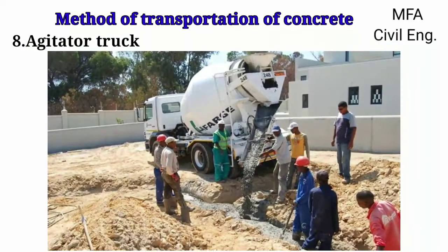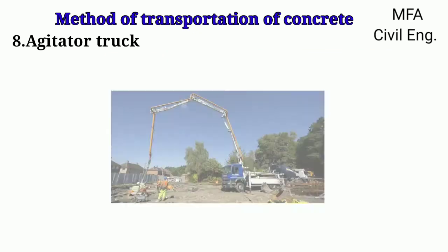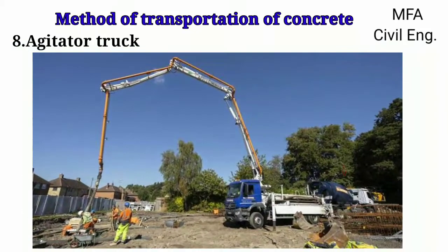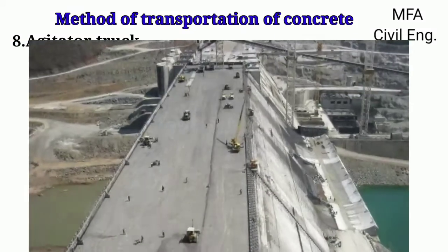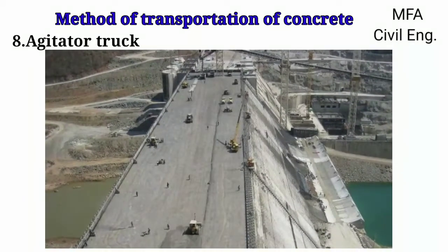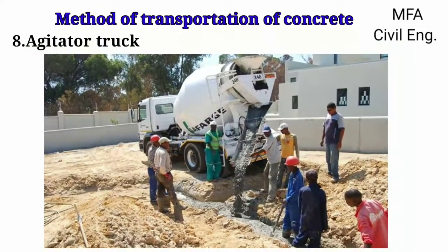Agitator trucks have concrete in a slowly revolving drum so that it is kept in a plastic state without setting. These are also used for huge work or mass concreting of a gravity dam. Nowadays, ready-mixed concrete is transported to the site from the mixing plant in agitator trucks.